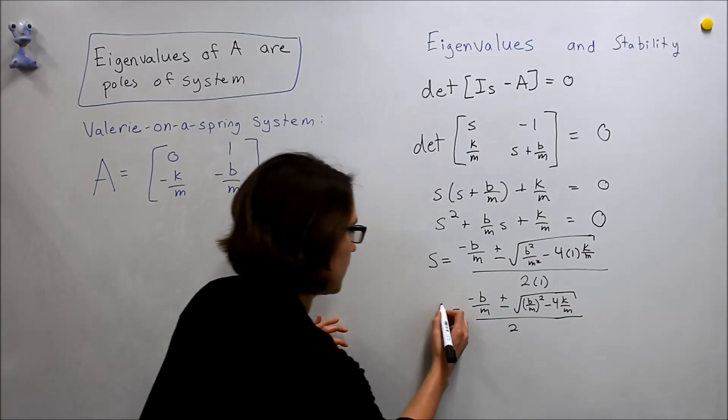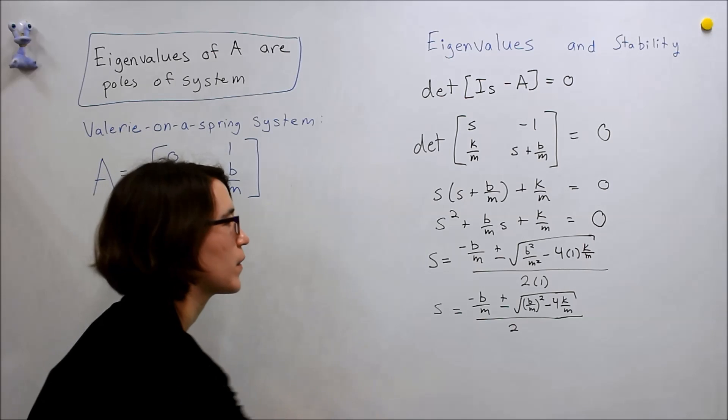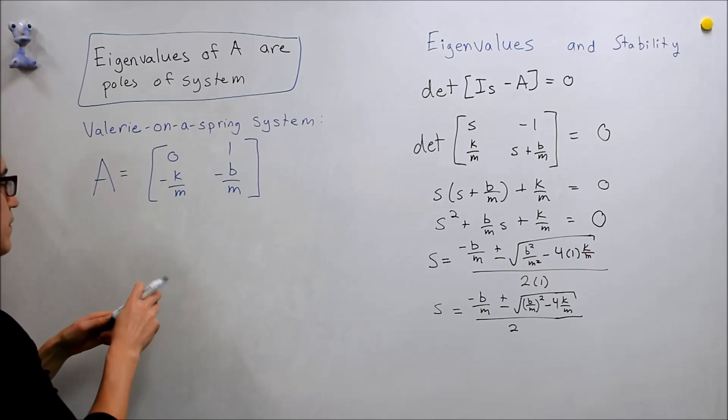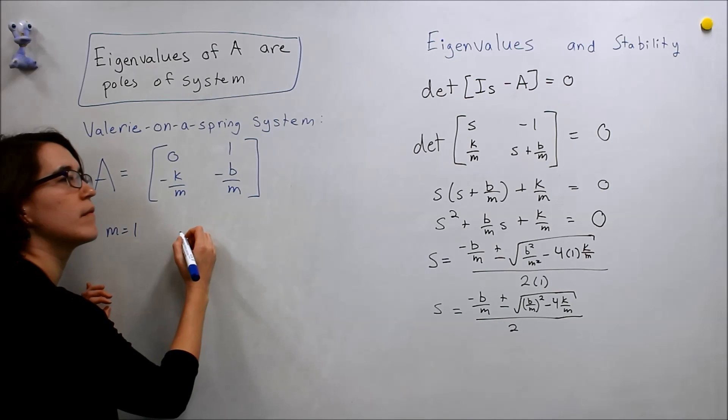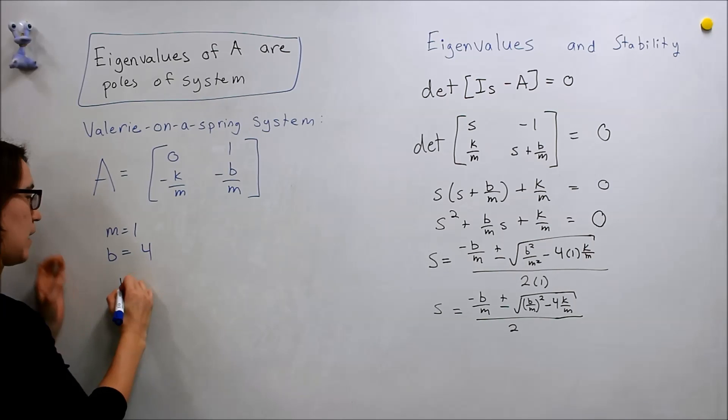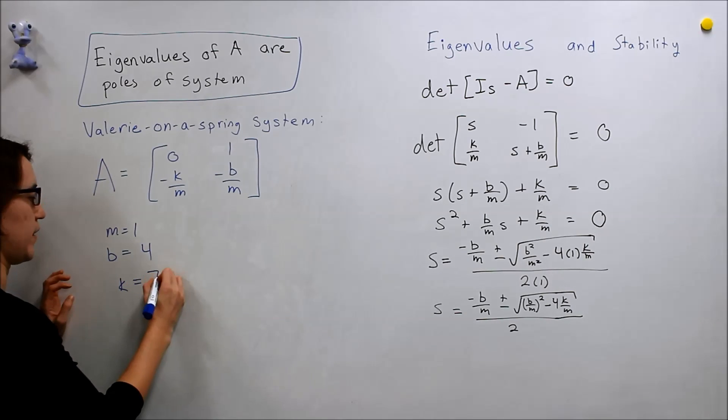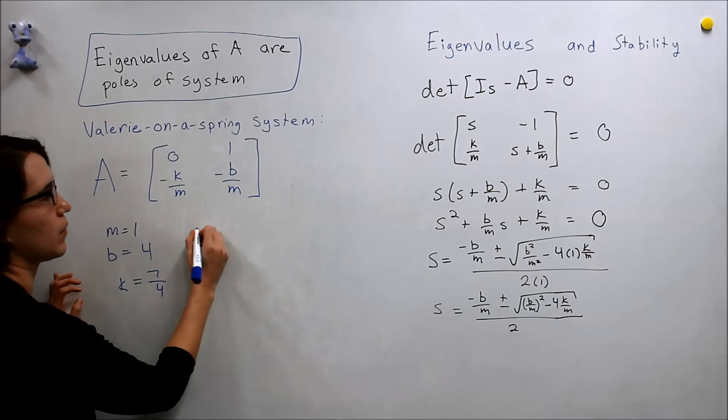So if we're lucky, we might be given values. Say we're given the values of M equals 1, B equals 4, and K equals 7 over 4. So we take these and plug it into there, what do we get?